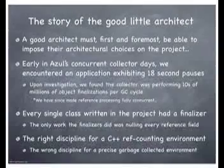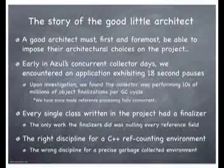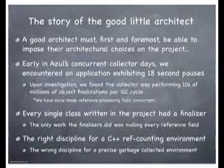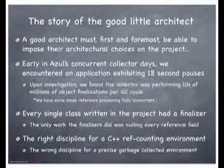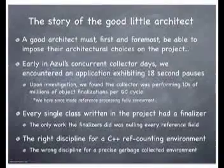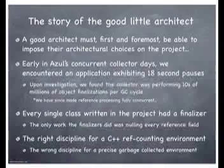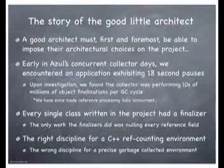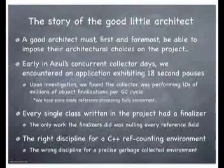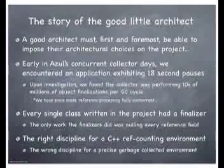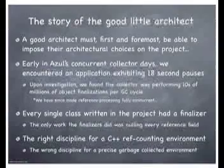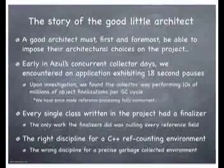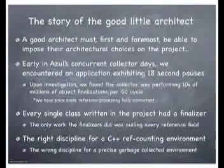So we went and dug in to figure out what's going on. We found out that the collector was doing tens of millions of finalizations every GC generation collection. Since then our collector does those concurrently, so that wouldn't even stop for that. But at the time, finalization was still a stop-the-world operation for us. So we looked inside to see why this application was generating so many finalized objects. We found out that every single class written in this project over a year and a half had a finalizer — every single class they wrote.